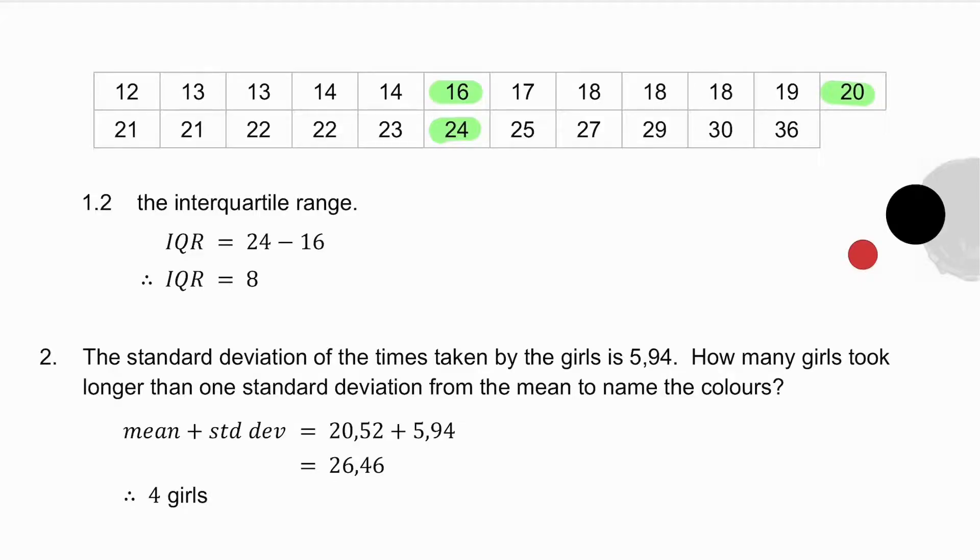The next question says to you the standard deviation of the times is 5.94. And it asks you how many girls took longer than one standard deviation from the mean. So what I do is I take the mean plus the standard deviation. I've worked out the mean. I've been given the standard deviation. I add them together. Where does that number fit on my data set? Well, it fits in here. How many girls took longer than that? There are 4 of them.